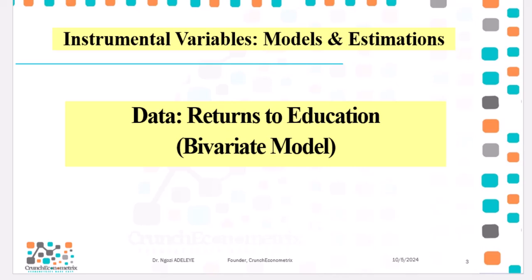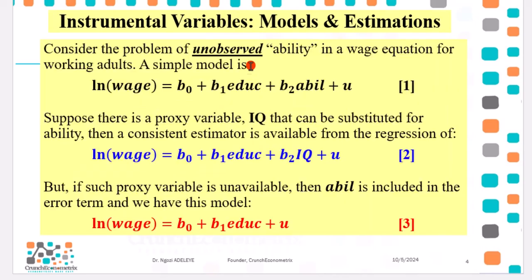So like I said, we are going to start with a bivariate model. Let us consider the problem of unobserved ability in the wage equation for working female adults. Equation one shows you a very simple model where the log of wage is a function of education and ability.